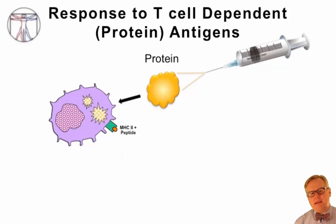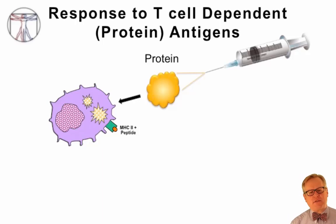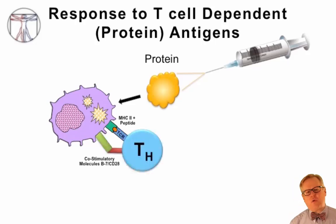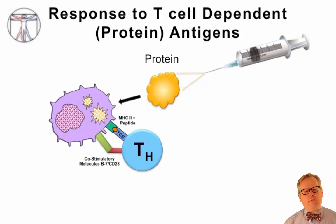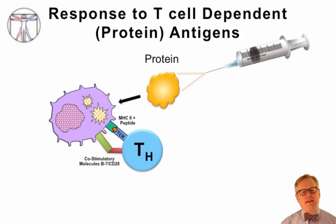Some of these phagocytes may stay at the site of the injection, but many will migrate back to local draining lymph nodes where they begin to interact with other immune cells to show them what they have ingested out in the tissues. Among the cells they interact with are T-cells, and this begins a germinal center reaction. The antigen presenting cell presents in MHC class II the pieces of the antigens that it has taken up and digested.